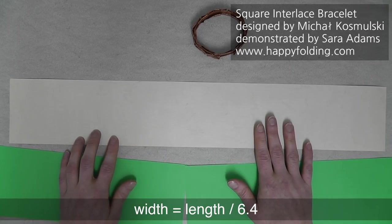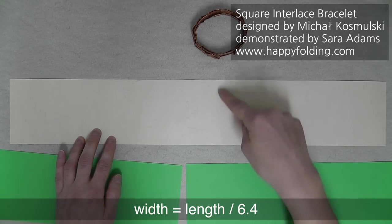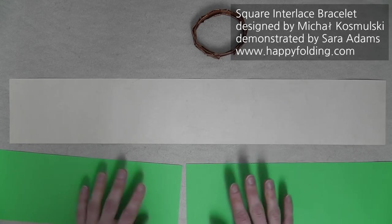That's because we need to fold a square grid with 64 divisions by 10 divisions, and that's actually the first step.